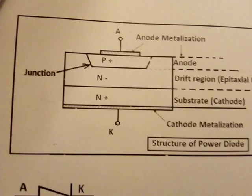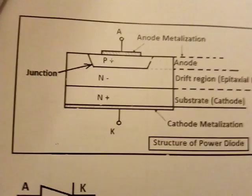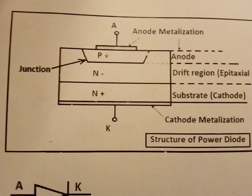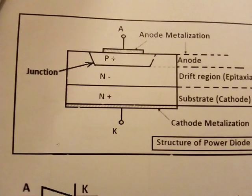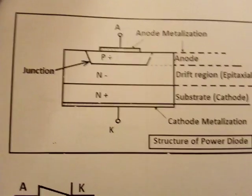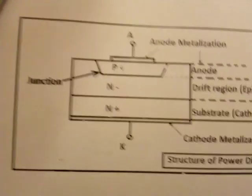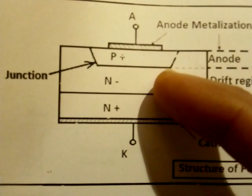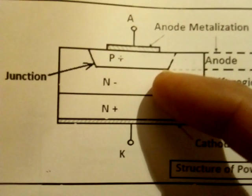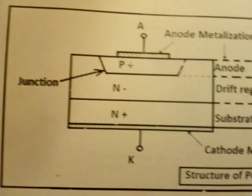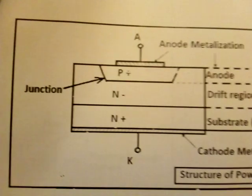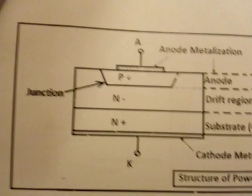So the high reverse biased voltage is achieved—that means the high peak inverse voltage is achieved by lightly doping the N region. And high current is achieved by increasing the cross-sectional area of the diode.